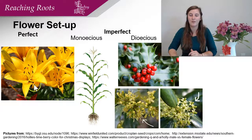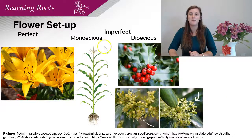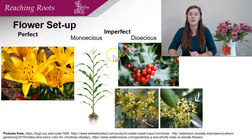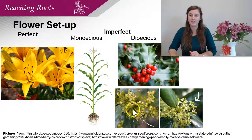Quick review: perfect flowers have both male and female parts in the same flower. Imperfect plants do not have this — they are either monoecious, meaning male and female parts at different locations of the plant, or dioecious, meaning you have two separate plants.